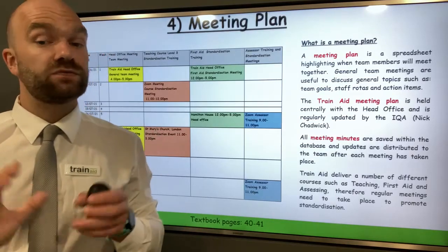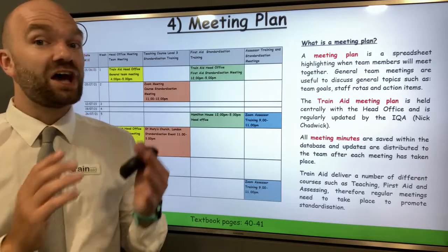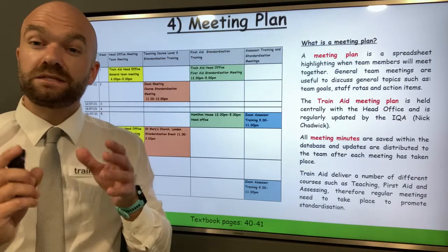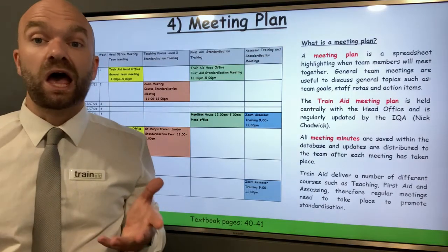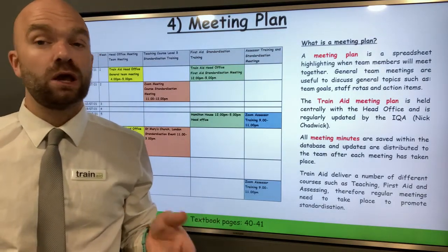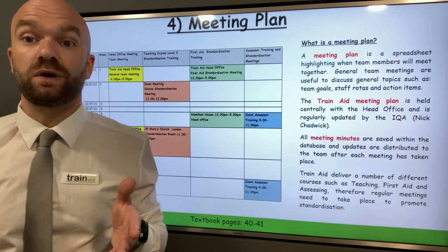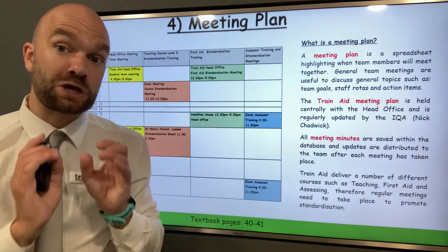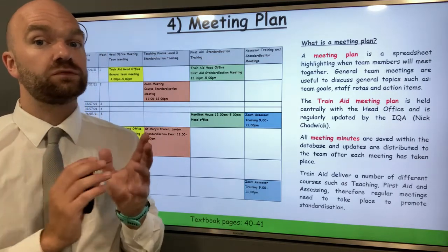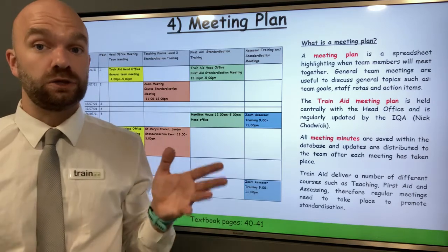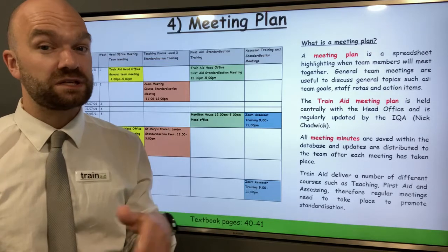For any IQA, it's very important that you create, promote, and update a meeting plan. A meeting plan is plotting where you are going to meet with your team. Meeting plans can often be created on perhaps an Excel spreadsheet. They can be held centrally within your organisation and updated by you. Meetings are a fantastic way of promoting standardisation.